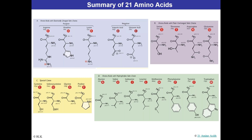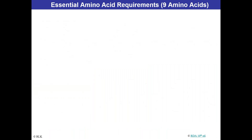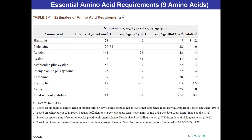If you were to look at a 21st amino acid, selenocysteine is considered non-standard — not really found in standard genetic coding. Some scientists do introduce non-standard, non-natural amino acids when pursuing certain research, such as genetically modifying a bacterium to express a specific molecule. But the 20 standard amino acids are what we've been discussing, and they're involved in all kinds of protein formation.